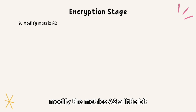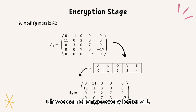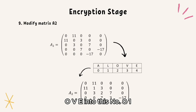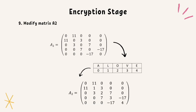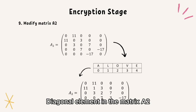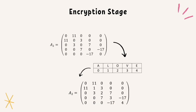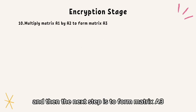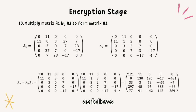Then we have to modify matrix A2 a little bit. We change every letter A, L, O, V, E into the numbers 0, 1, 2, 3, and 4 according to this table. And we change every diagonal element in matrix A2 into the numbers 0, 1, 2, 3, 4. Then the next step is to form matrix A3 by multiplying matrix A1 with matrix A2, as follows.